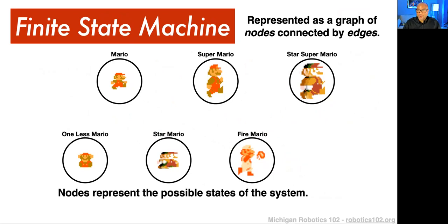We have Mario, Super Mario, Star Super Mario, Fire Mario, Star Mario, and I just called this one 'less Mario.' These are the states that Mario could be in. There might also be a visual description — these little icons represent sprites. There might be other things we ascribe to Mario, but those nodes hold information that are relevant to us.